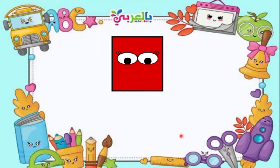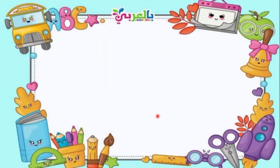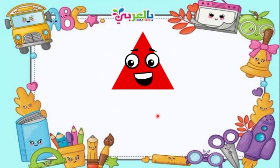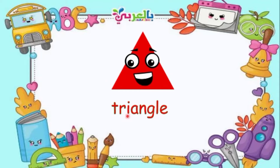What shape is this? It's a square. Again, what shape is this? Square — S-Q-U-A-R-E. Square. Next, what shape is this? Triangle. One more time — Triangle. T-R-I-A-N-G-L-E. Triangle.